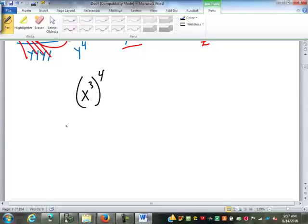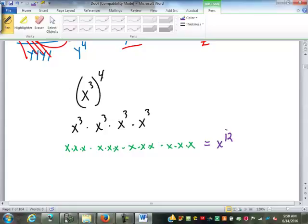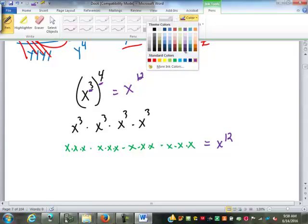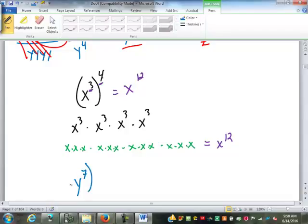What if I have x to the third to the fourth power? Well, that fourth power means I have four of those x to the thirds being multiplied together, doesn't it? Well, each of those x to the thirds is three x's, isn't it? Those are being multiplied together. How many x's do I have there? Twelve. X to the twelfth. Again, one way to come about that using just the three and the four would have been to multiply them. Three times four makes twelve. X to the twelfth. So if I have y to the seventh to the fifth power, it's going to give me y to the thirty-five. Seven times five is thirty-five.